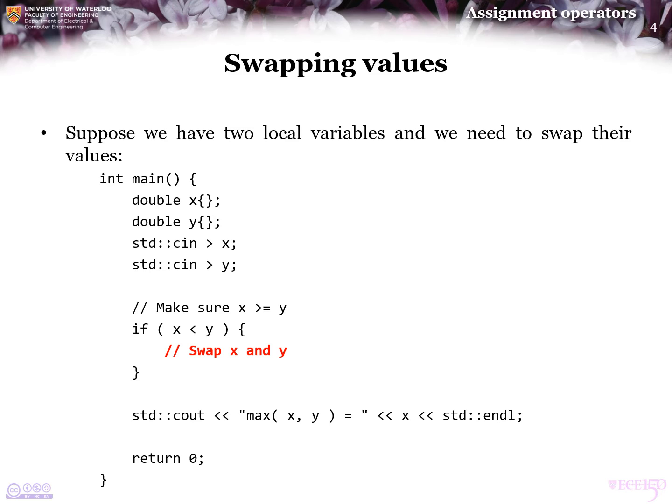Now, suppose we have two local variables and we need to swap their values. For example, here we have a program that asks the user for two doubles, x and y. We'd like to make sure that x is greater than or equal to y. So, if x is less than y, what we're going to do is we're going to swap the values of x and y so that the maximum is the value x.